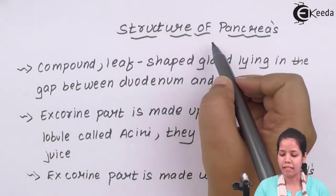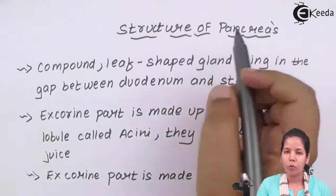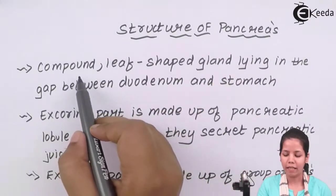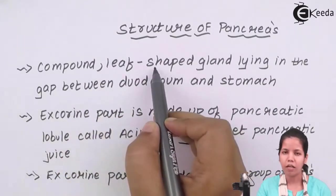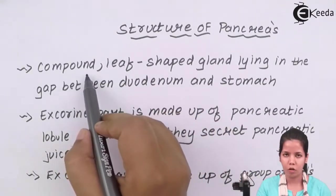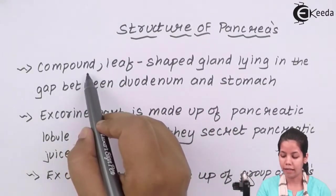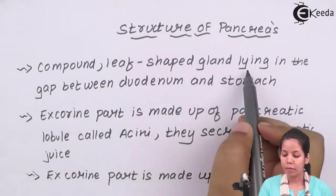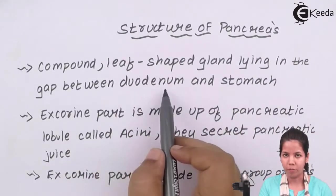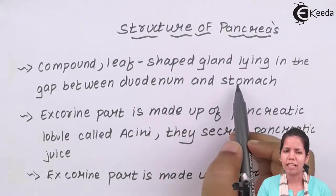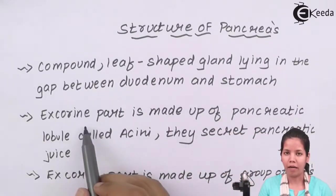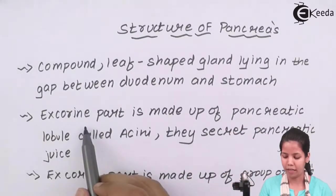The structure of pancreas: when I say pancreas, these are nothing but leaf-shaped compound glands lying between the gap of the duodenum and stomach, basically below the stomach region. Now the exocrine part, or you can say the outer part of the pancreas, is basically made up of acini lobules or acini cells.